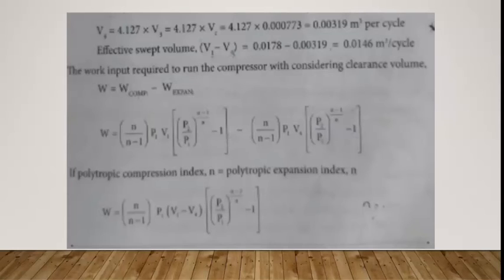The effective swept volume is V1 minus V4, which equals 0.0178 minus 0.0031, giving 0.0146 meter cube per cycle.